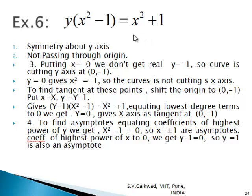The final example is y(x² − 1) = x² + 1. The curve is symmetric about the y-axis since all powers of x are even, and a constant is present so it does not pass through the origin. Putting x = 0 gives y = −1, so the curve cuts the y-axis at (0, −1); putting y = 0 gives x² = −1, so there is no real x-intercept. Shifting the origin to (0, −1) and equating the lowest degree term gives y = 0, so the x-axis is tangent at (0, −1). The coefficient of y is x² − 1, giving asymptotes x = ±1. The coefficient of x² gives y − 1 = 0, so y = 1 is also an asymptote. The curve has three asymptotes: x = ±1 and y = 1.